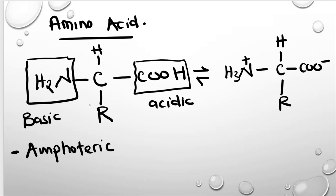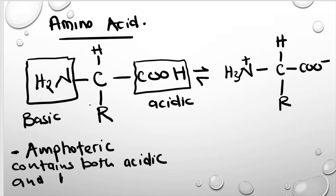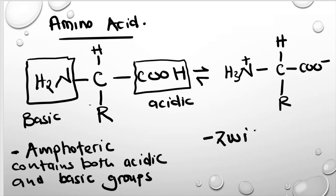Because the amino acid contains both acidic and basic groups it is amphoteric. When it ionizes, it contains both a negative charge and a positive charge, so it is referred to as a zwitterion — an ion that has both a negative and a positive charge.